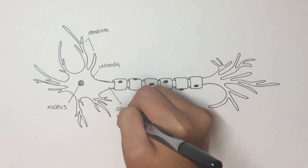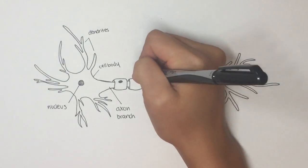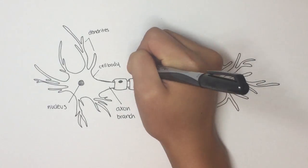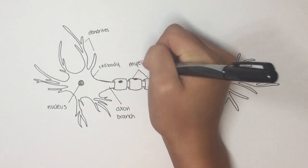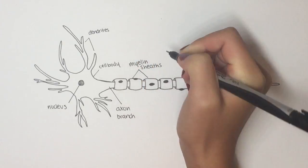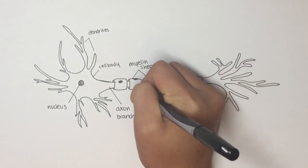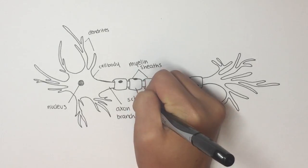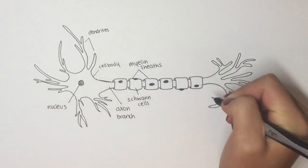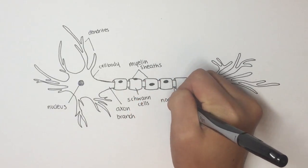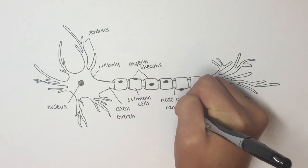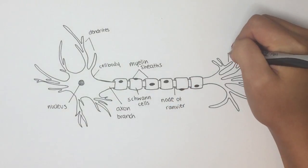This particular neuron is myelinated, but this is not always the case. Myelin sheaths are simply made of Schwann cells that have been wrapped around the axon. In between the myelin sheaths, we have the ever-important nodes of Ranvier, and at the end of the neuron are the axon terminals.